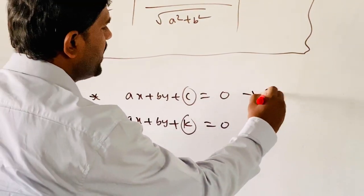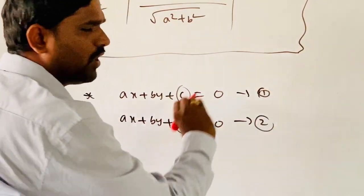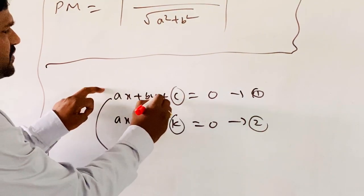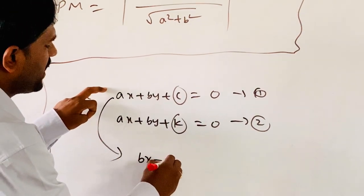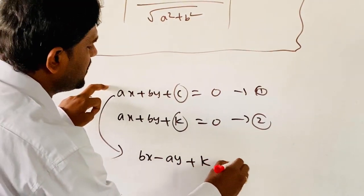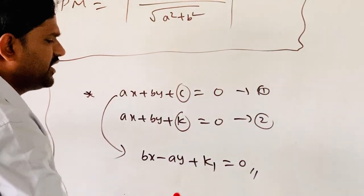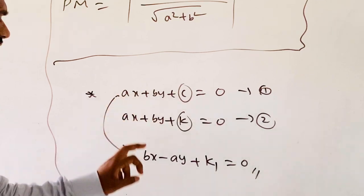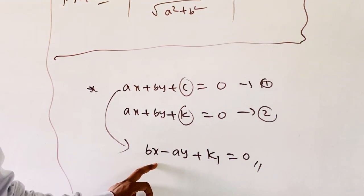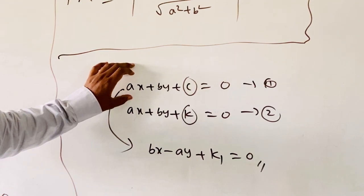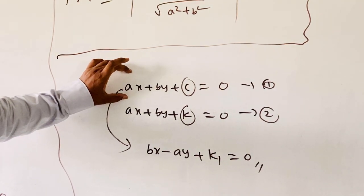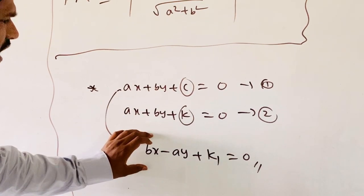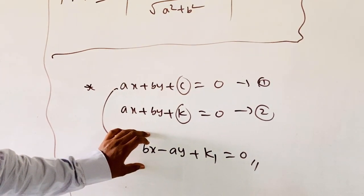So these two lines are parallel. With respect to Equation 1 (AX plus BY plus C equals 0), the perpendicular line is BX minus AY plus K equals 0, where K is a constant. Observe that the X and Y coefficients are interchanged with a negative sign — this is the perpendicular line to Equation 1. So Equation 2 is parallel to Equation 1, and the other form is perpendicular to Equation 1.